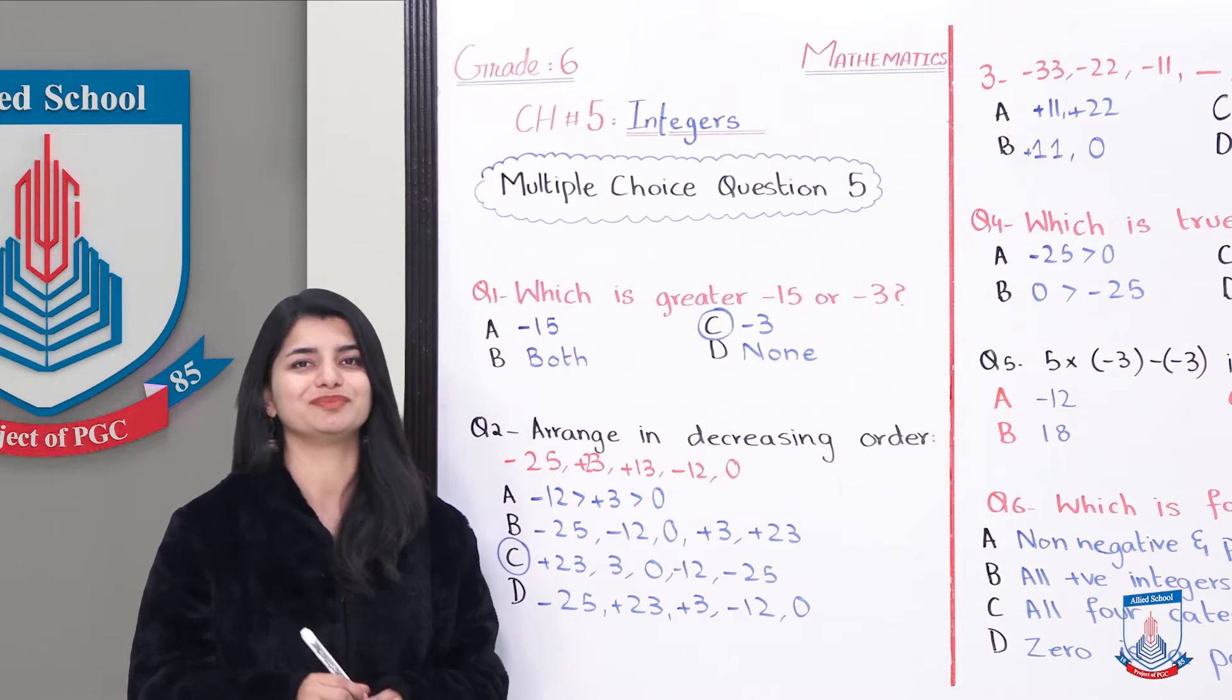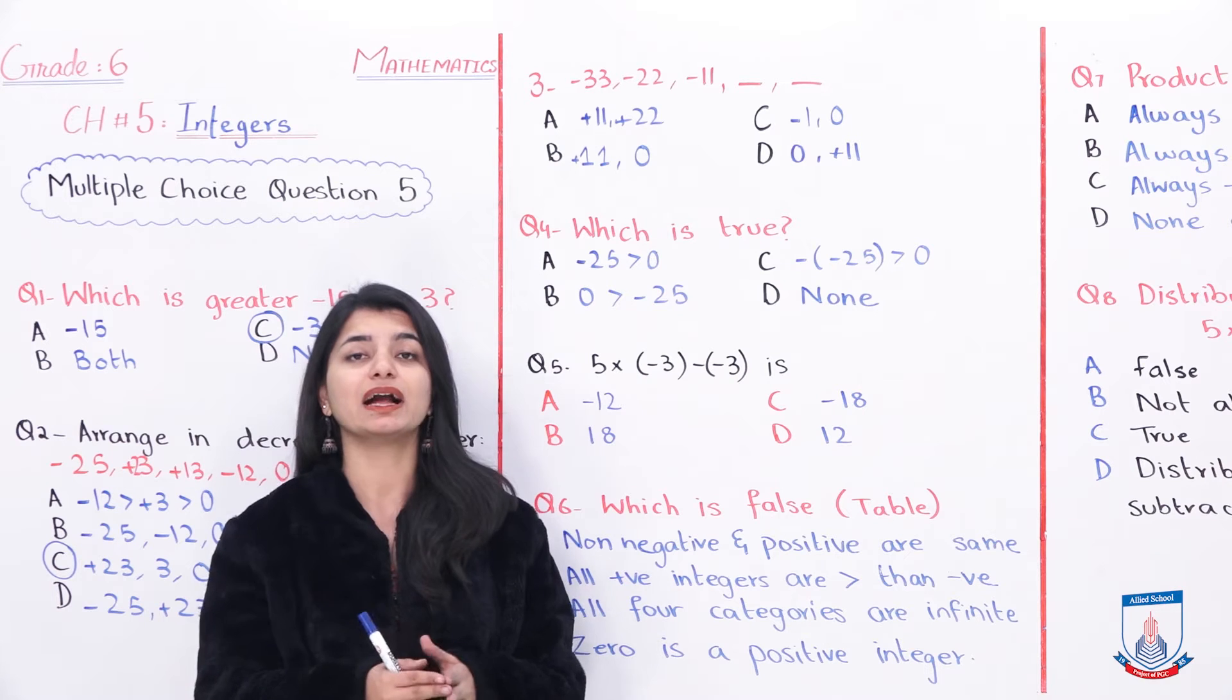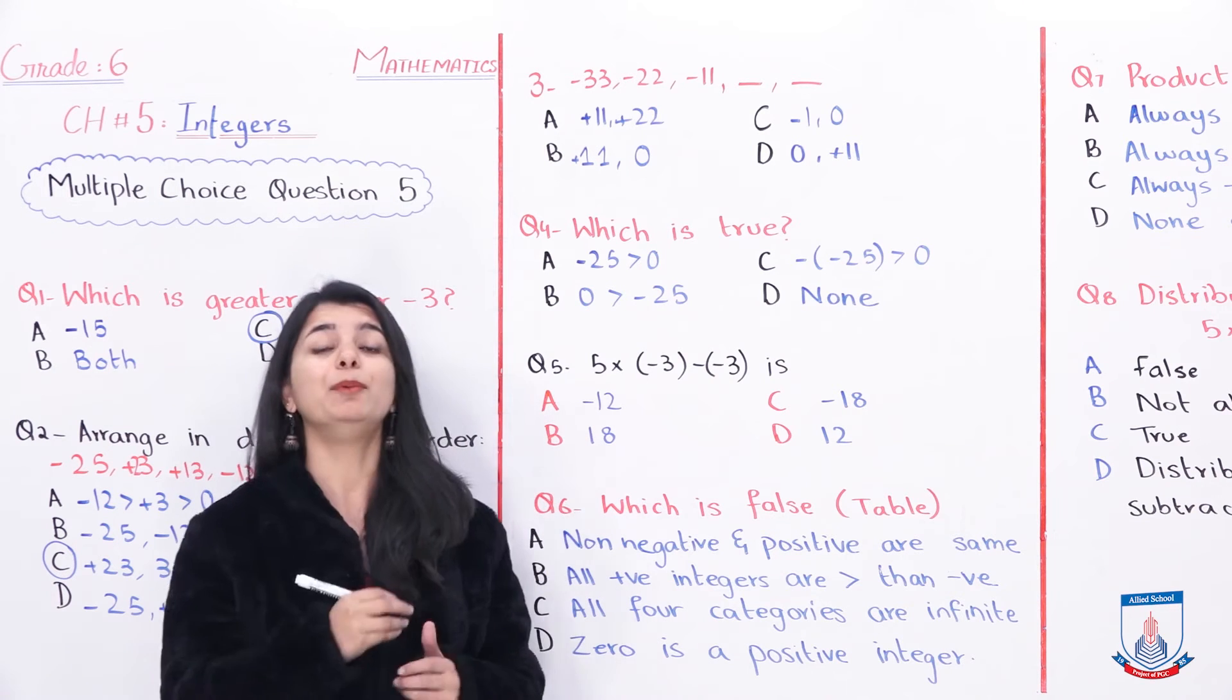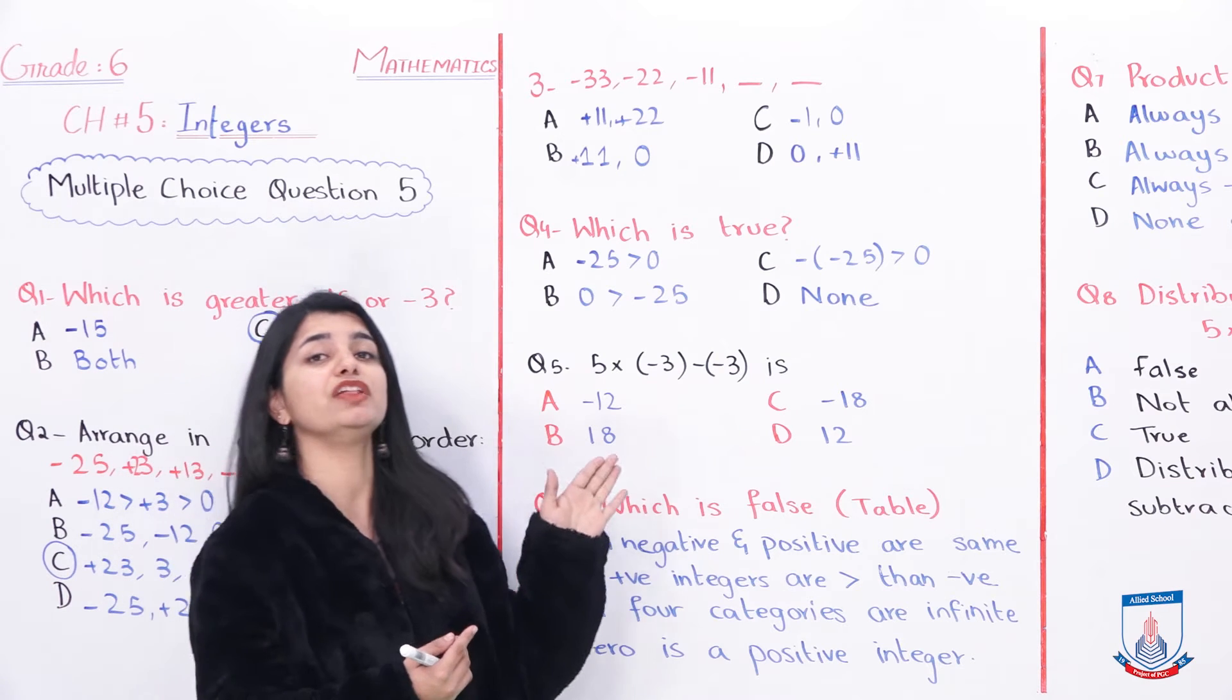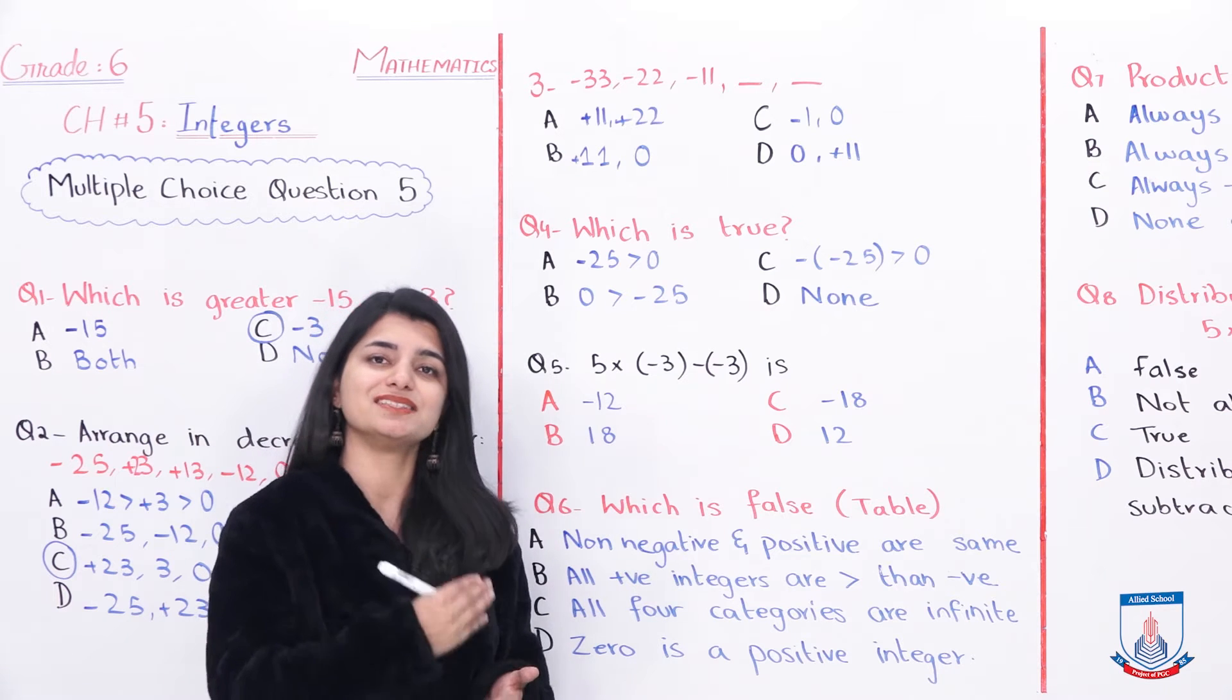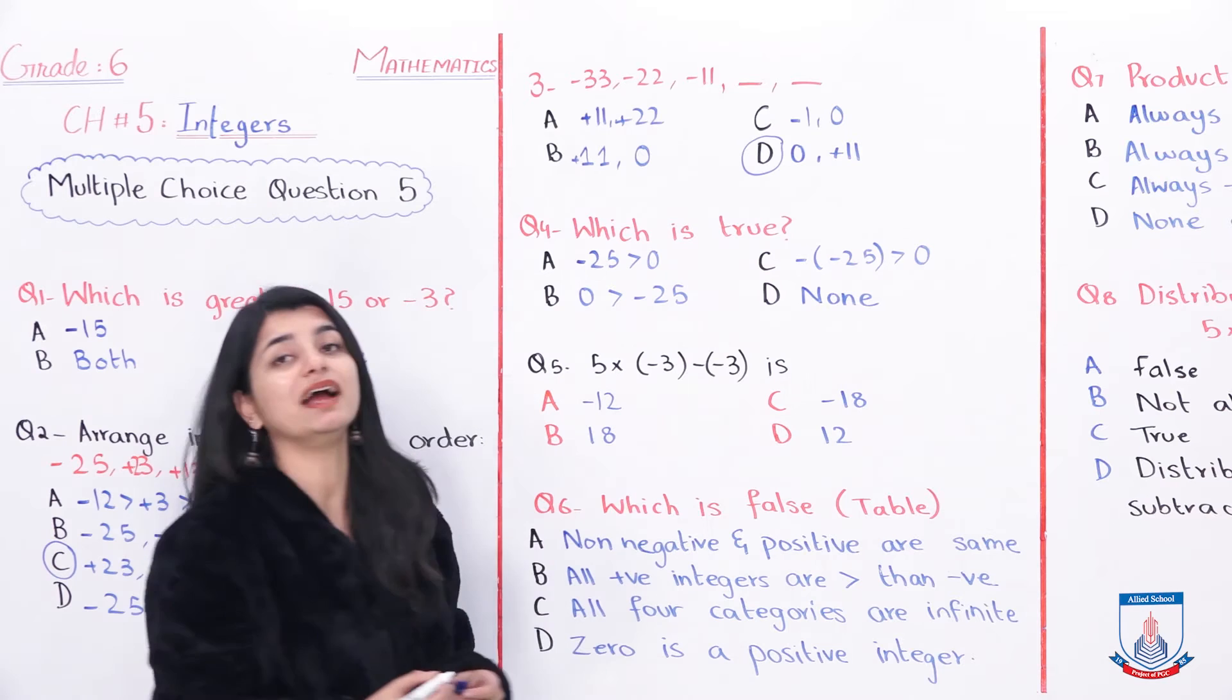MCQ number 3 is minus 33, minus 22, minus 11, and the next two numbers are what? If you notice, negative numbers are going forward. Minus 33 is on the number line, then we have minus 22, and the difference is 11. Now what happens in this sequence? You have to notice that you are constantly adding 11. First you have minus 33 plus 11 equals minus 22. After that, minus 22 plus 11 equals minus 11. And then you further add 11 into it. So minus 11 plus 11 would be 0. And then if you add 11 to 0, then you have positive 11. So the option that we have here is option D, and that is your accurate answer.